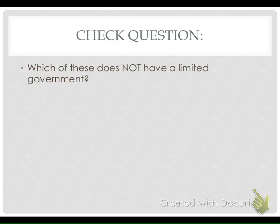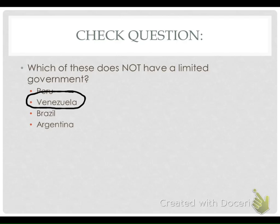Which of these does not have a limited government? We're going to list out all four answers on your notes page: Peru, Venezuela, Brazil, and Argentina. Look at your notes — which of these are limited governments? We're going to circle the unlimited government, and this one is going to be Venezuela.